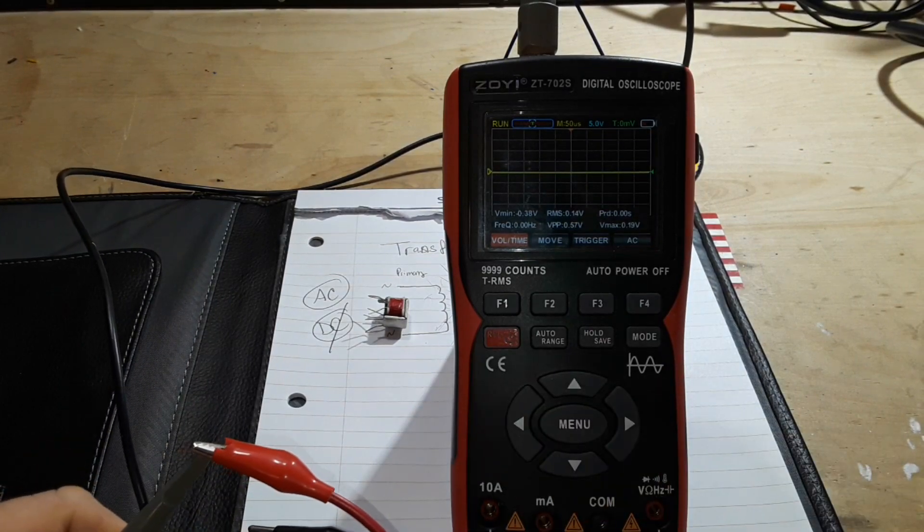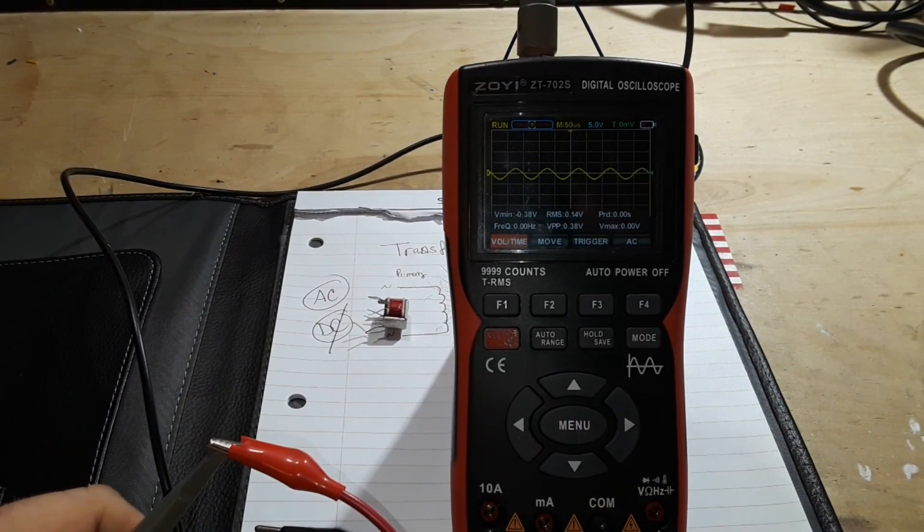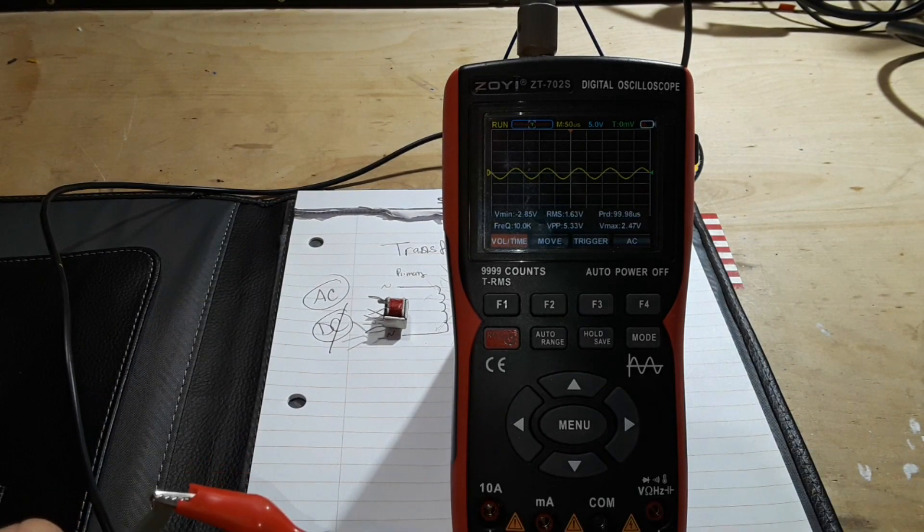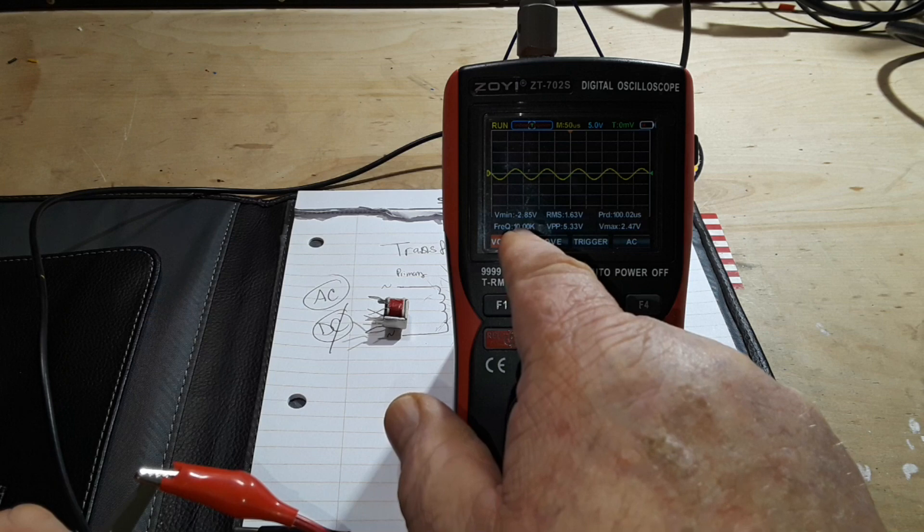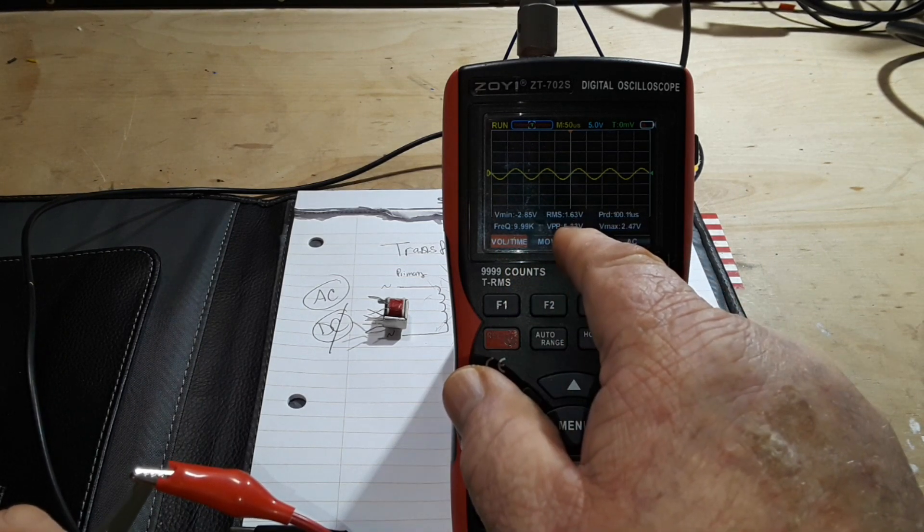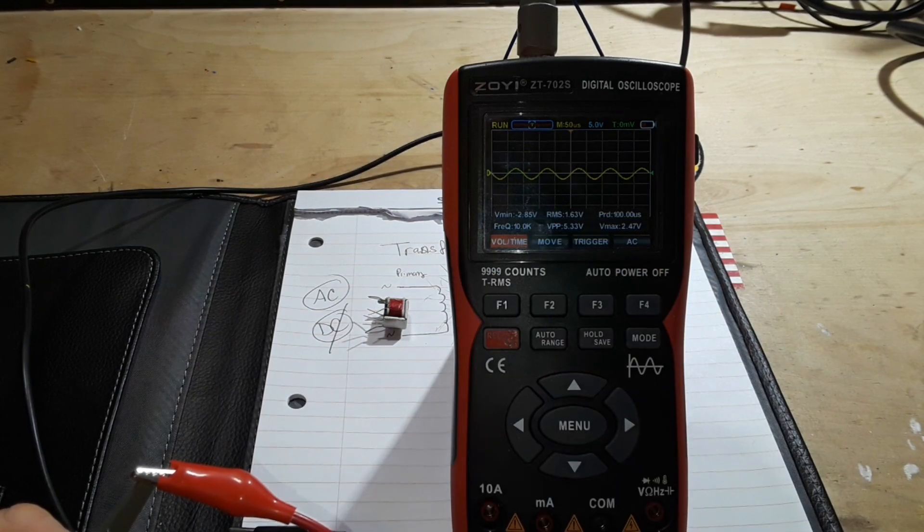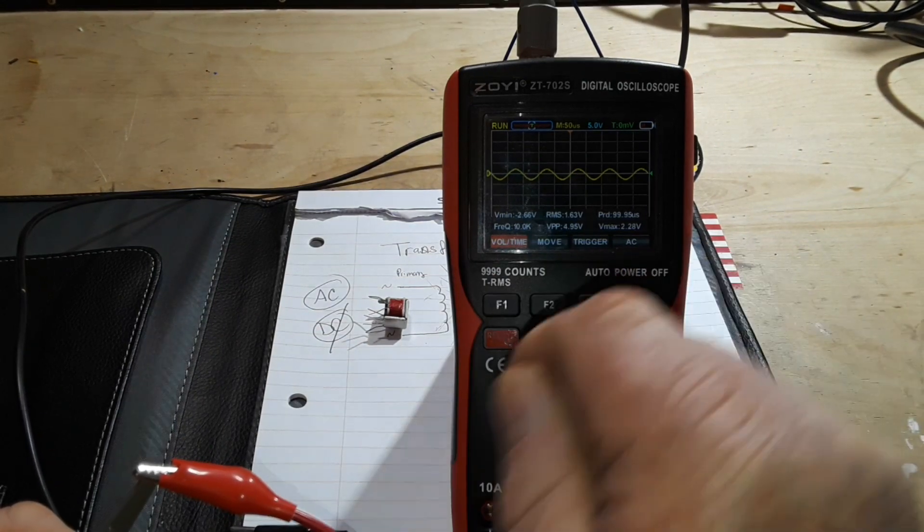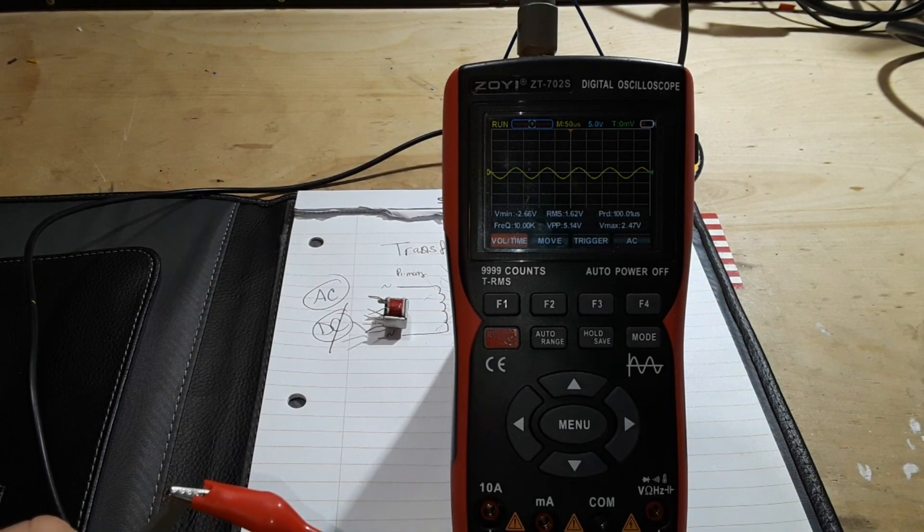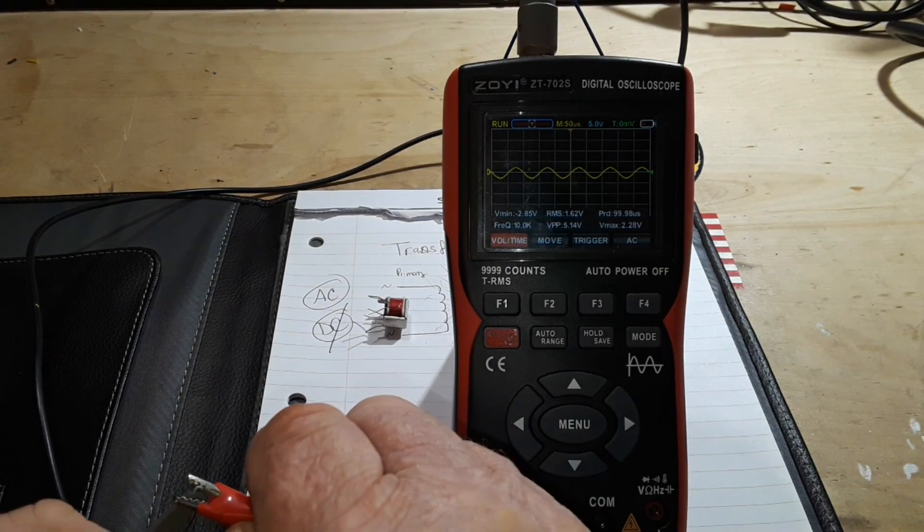and turn on the output. And you see here we have 10K, 5 point, right around 5 volts peak to peak. And there's our period. There's our RMS 1.63 volts. So I'm going to disconnect this now.